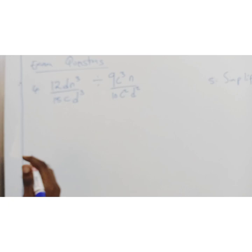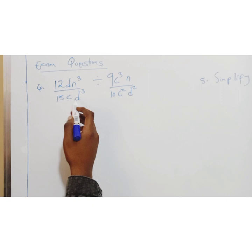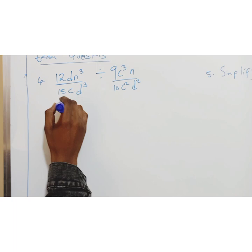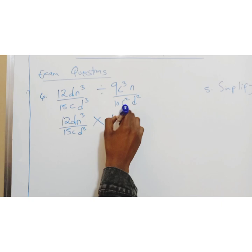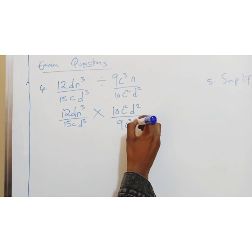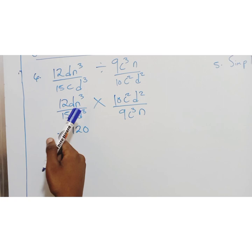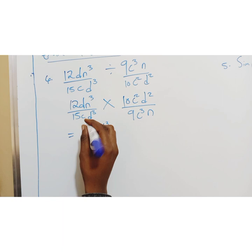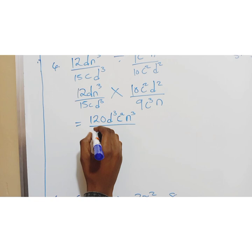We're now looking at example 4. Exam question as usual. They've told us to simplify this. We have 12dn to the power 3 divide 9c to the power 3n. Then we have 15cd to the power 3. We have 10c squared d squared. So once you have this, what you do is just change this to multiplication. Once you have times here, this will go up. So 10c squared d squared over 9c to the power 3n. So what I like doing is just go directly. So 12 times 10 is 120. Then I have d times d squared is d to the power 3. You multiply the powers. Then you have c squared. I have n to the power 3.